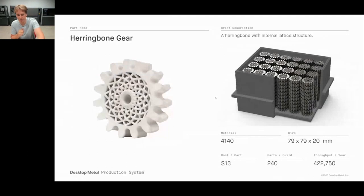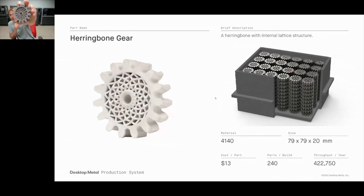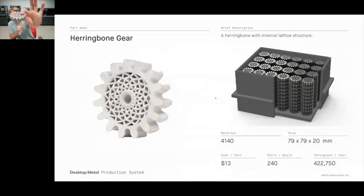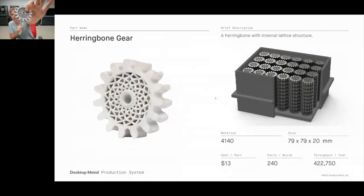One more geometry on the Production System — a herringbone gear featuring a nice lattice structure inside. This part can be produced for just $13, with over 240 parts per build and a throughput of over 400,000 per year. Really cranking up throughput and driving down cost to justify high-volume manufacturing with metal 3D printing.